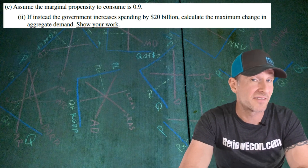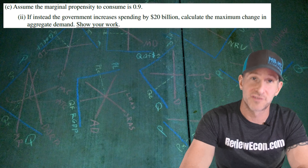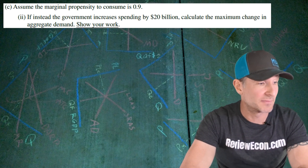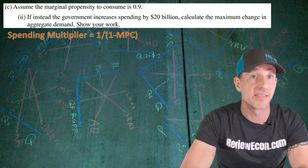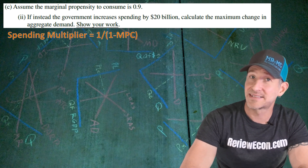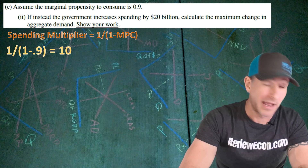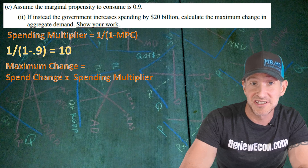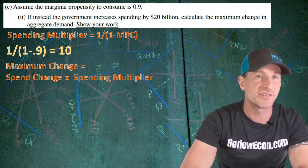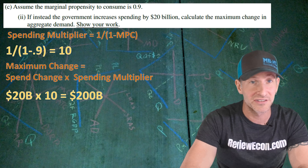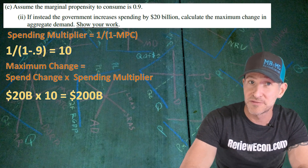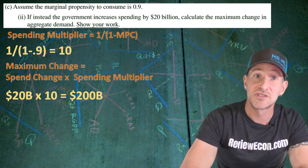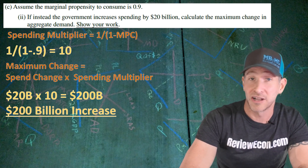For part C(ii), we have to say what would happen if instead of a tax cut, there's a spending increase of $20 billion — and again, we have to calculate it showing our work. Now we are dealing with the spending multiplier. The spending multiplier is 1 divided by 1 minus the marginal propensity to consume, giving us a spending multiplier of 10. The maximum change in aggregate demand is the change in spending times the spending multiplier: $20 billion times 10 equals a $200 billion maximum increase in aggregate demand. Specify $200 billion increase along with your shown work.